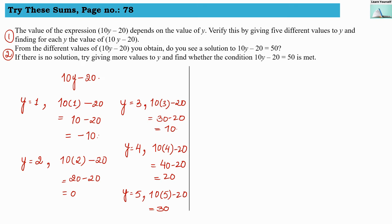So here we have taken 5 different values of y: 1, 2, 3, 4, and 5. And for each of these different values we got different answers. So for each different value, the value of the expression will differ. Now comes the second question.